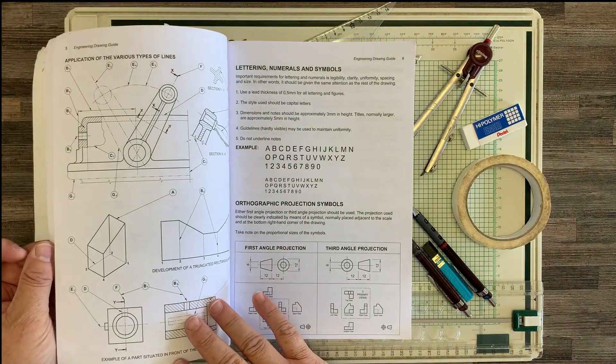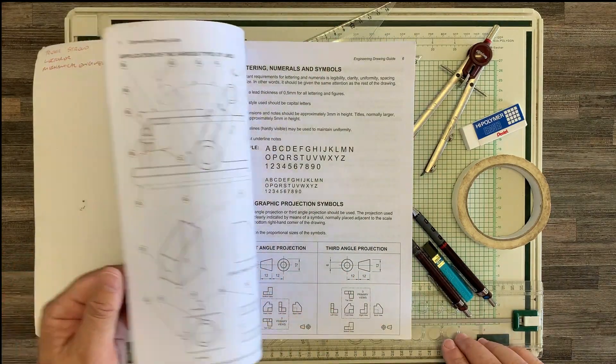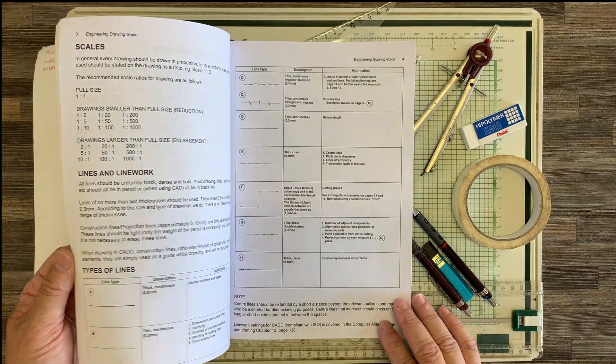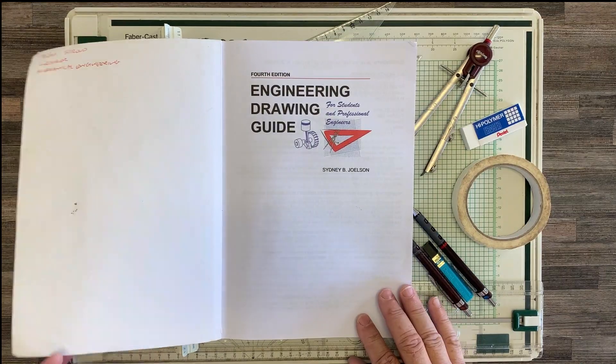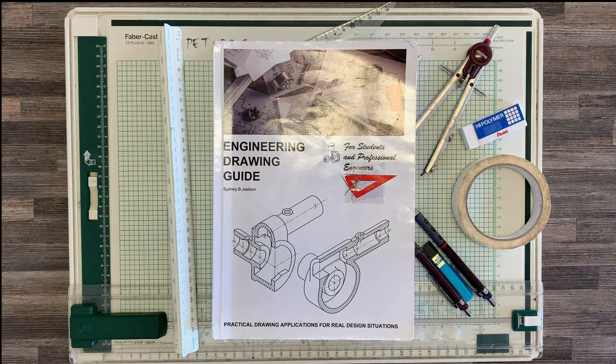So we're going to start right at the back at the beginning with lettering, with different line styles and scales, etc. Okay, but before we do that, let's carry on looking at all the equipment.